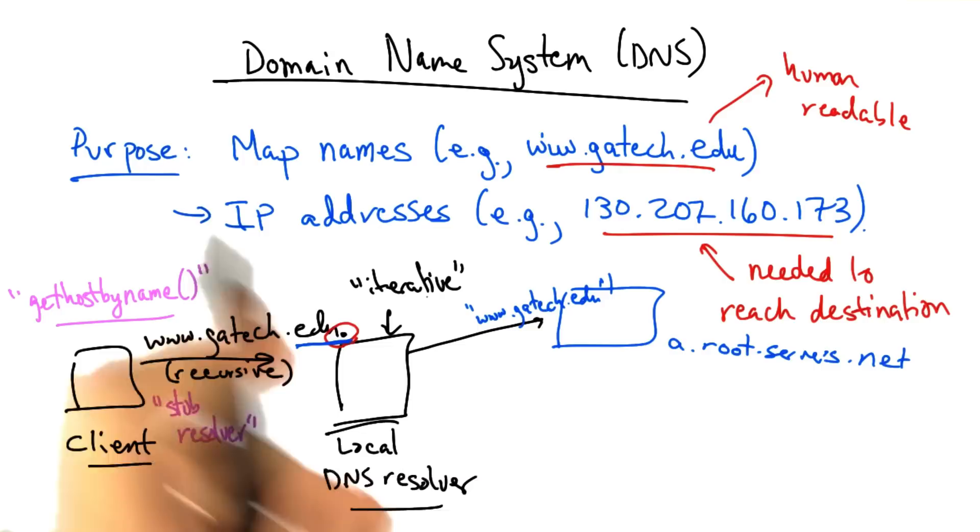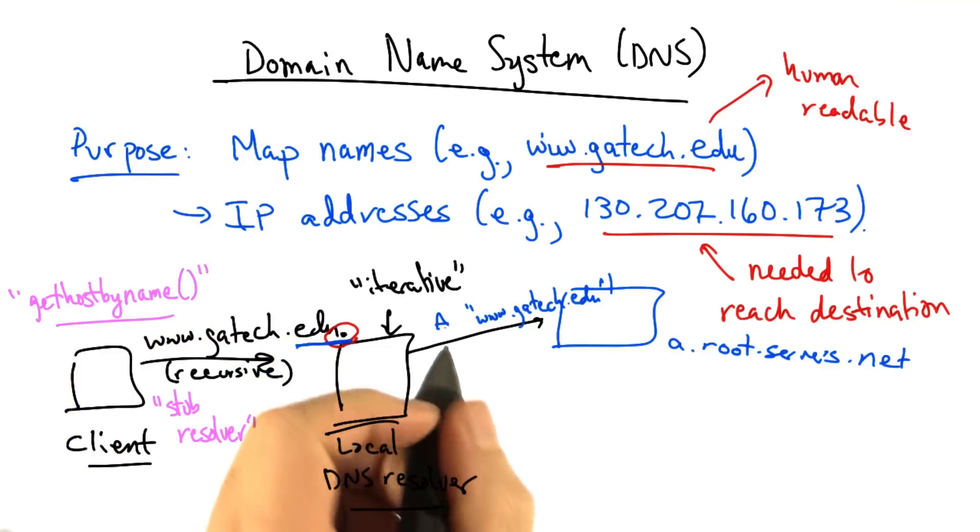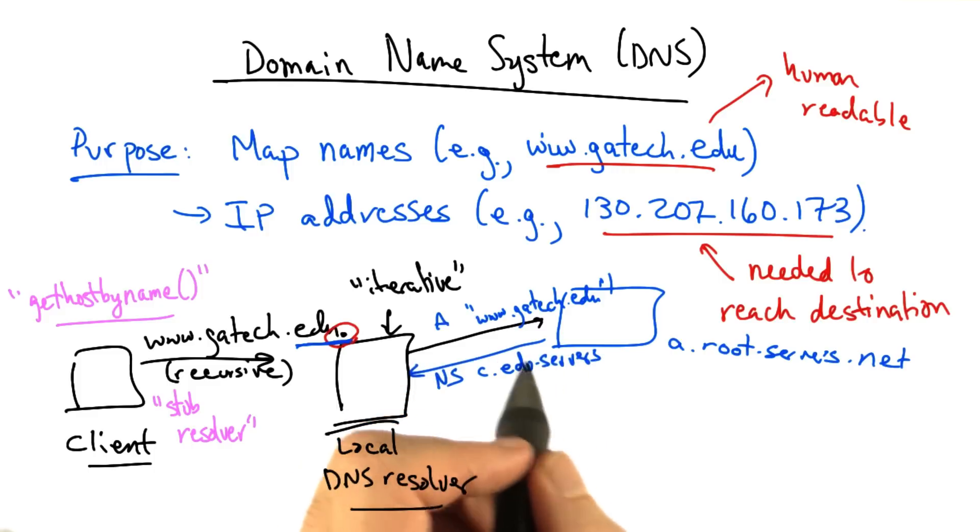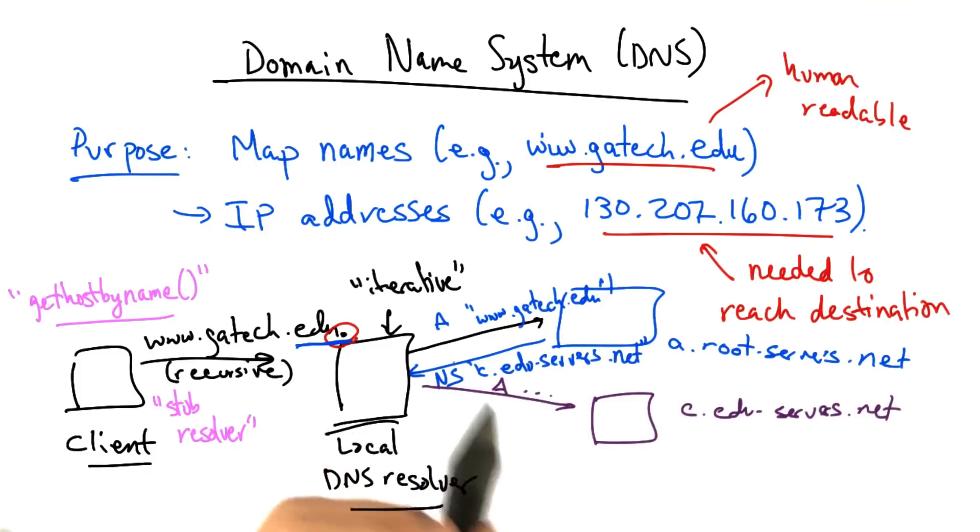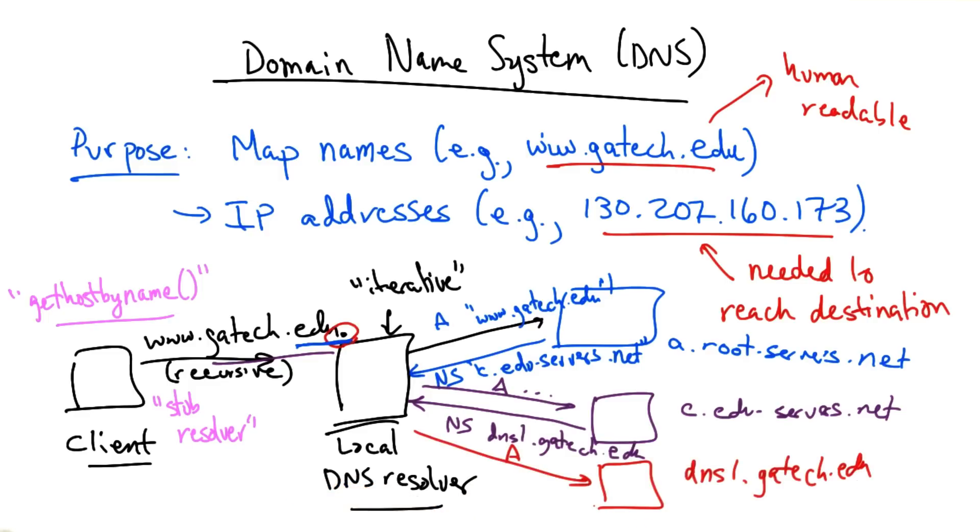say, a.rootservers.net. This would be an A record query, but the answer might return with what's called an NS record, which is a referral. In this case, the answer might be a referral to the EDU servers. Now the local resolver issues the same query to the EDU servers and receives a referral to the authoritative servers for .edu. Finally, the local resolver might query the authoritative name server for gatech.edu and actually receive an A record indicating the actual IP address that corresponds to that name.